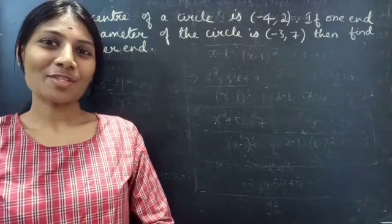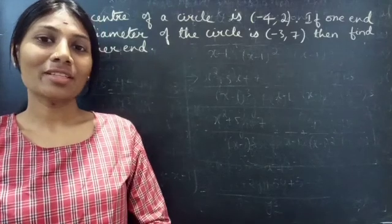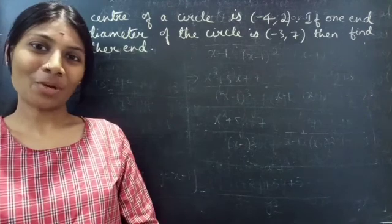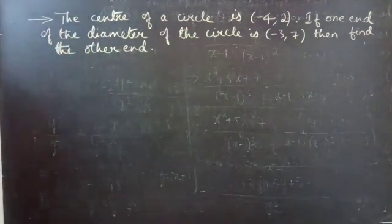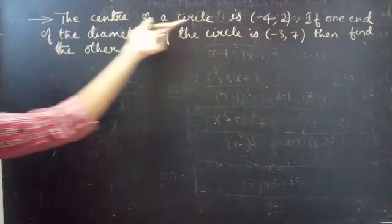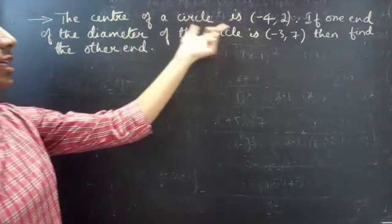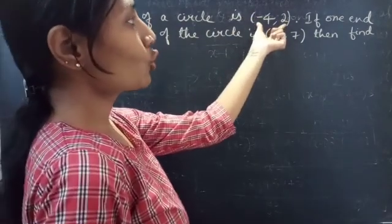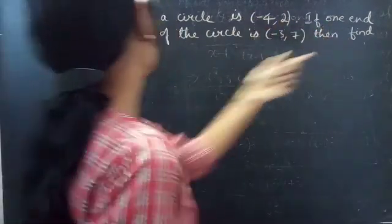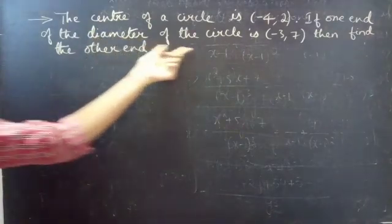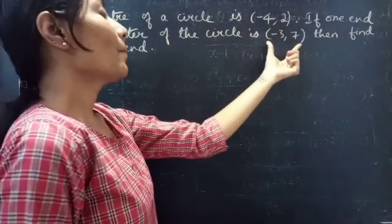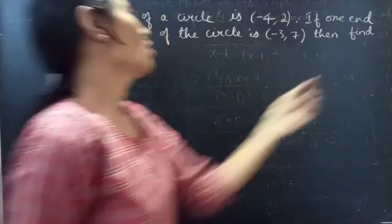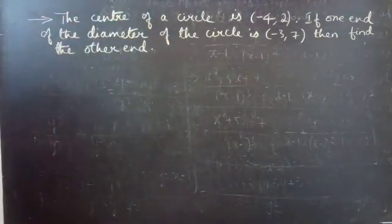Hello everyone, this is Jekalpna here. In this video we are going to see a problem from coordinate geometry. The center of a circle is the ordered pair minus 4 comma 2. If one end of the diameter of the circle is minus 3 comma 7, then find the other end.